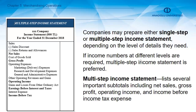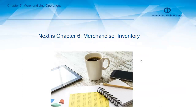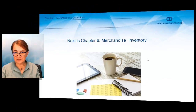As you can see on the screen, the multiple-step income statement lists several important subtotals such as net sales, gross profit, and income before taxes. Sales discounts and sales returns and allowances are subtracted from sales revenue to get net sales. When you subtract cost of goods sold from net sales, you get gross profit. Then you subtract operating expenses. Revenue-related contra accounts are reported in the same section as revenue. On the next chapter, we'll talk about merchandise inventory in more detail.